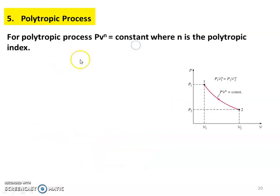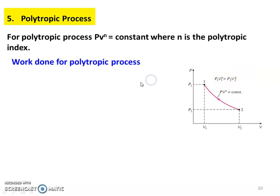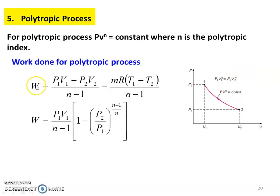Next, polytropic process. In the polytropic process, PV to the power N equals constant, where N is the polytropic index. This is the same as the adiabatic process equation but with gamma replaced by N. Process goes from state 1 to 2, with P1·V1^N equals P2^gamma. Work done: W equals (P1·V1 minus P2·V2) divided by (N minus 1), which equals m·R·(T1 minus T2) divided by (N minus 1), and also equals P1·V1 divided by (N minus 1) into [1 minus (P2/P1)^((N minus 1)/N)].